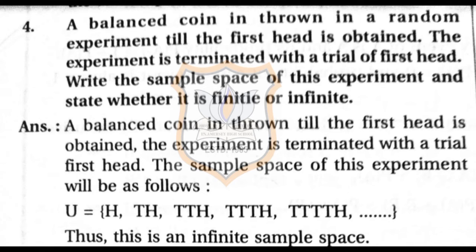Question 4: A balanced coin is thrown until the first head is obtained; the experiment terminates on the first head. Write the sample space and state whether it is finite or infinite. If you get head in the first toss, the outcome is just H. If you get tail then head, the outcome is TH.